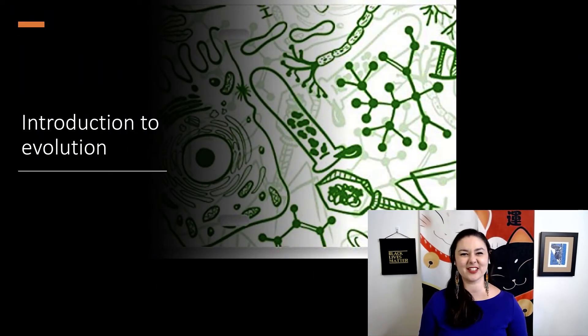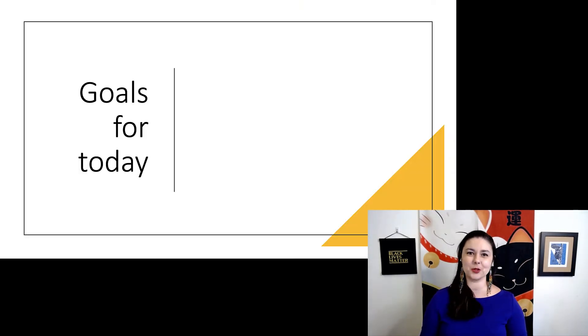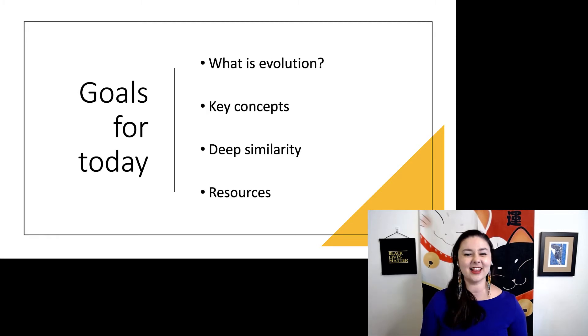The theory of evolution has been around since 1859, and a lot has happened since then. So if we want to understand this, there's a couple things we want to talk about. We're going to start talking about what is evolution in a very general sense. We'll go over a few key concepts, some terms that you're going to want to pay attention to and be able to define by the end of this module. Then we'll talk about deep similarity, and lastly, some resources for you to follow along if you'd like to understand things a little bit better.